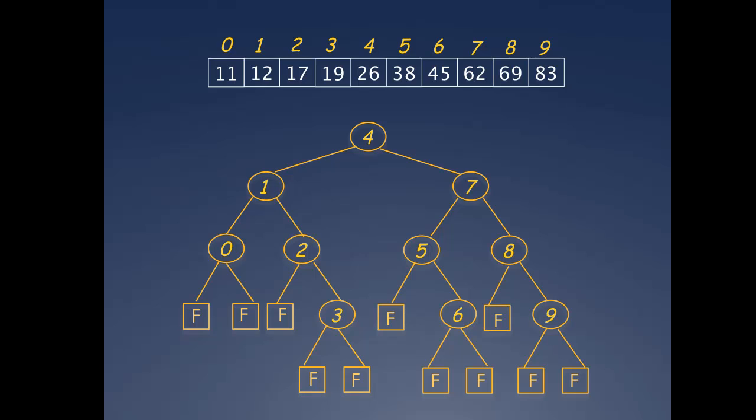Take the leftmost F box for instance. This box represents all fail searches that fall to the left of the first entry in the array, which would be any value less than 11. Here's another example. This failure box represents all values that fail between indexes 4 and 5, which are 27 through 37.